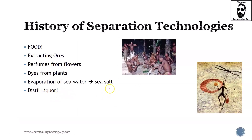A little bit on the history of separation technologies — this is just an overview of some important separation technologies. The first processes were done for food. You can imagine obtaining a honeycomb with a lot of honey, and you need to extract or remove it. Maybe they did this by filtration or maceration — maceration is nothing more than destroying the solid carcasses and removing the liquid part, essentially just removing the solids.